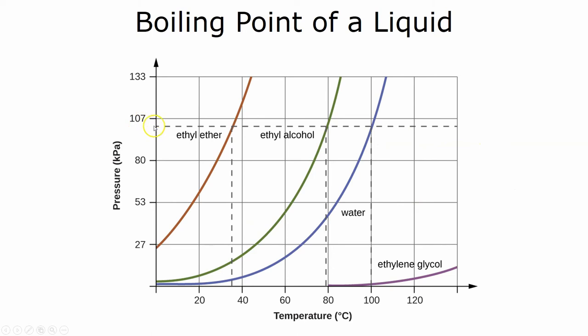Now, you notice here at about 101 kilopascals, which just happens to be one atmosphere of pressure, where these lines cross, 101 kilopascals, well, that looks very familiar, especially for water. So at 100 degrees, the vapor pressure of water equals standard atmospheric pressure. And that is basically the definition of the boiling point. The boiling point is the temperature at which the vapor pressure of the liquid equals atmospheric pressure.